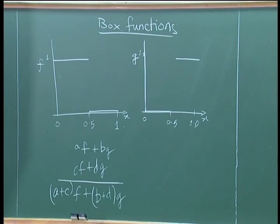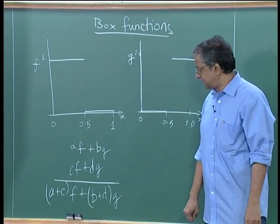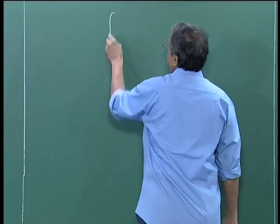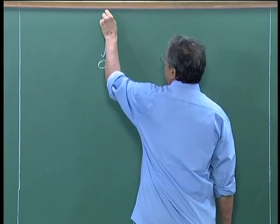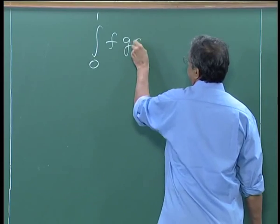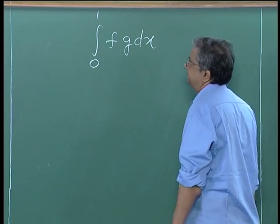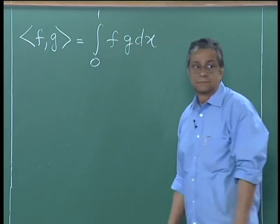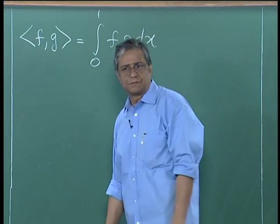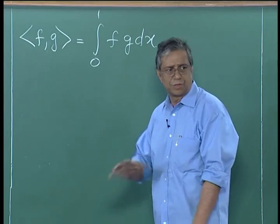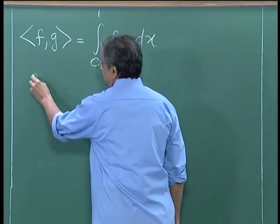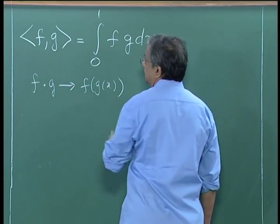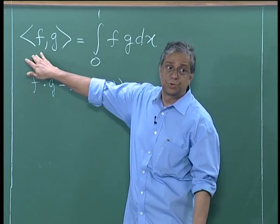For functions, we want to be able to define a dot product. I will define the dot product on [0,1] as the integral of f times g dx. I will use the notation ⟨f, g⟩, because the dot is already used for composition of functions — if you say f·g it could be confused with f(g(x)). So we introduce new notation for the dot product.